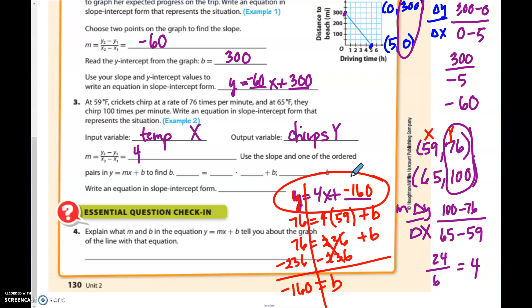So this equation is Y equals 4X minus 160. Number four. Explain what M and B in the equation tell you. M tells me slope. And that is my constant change. This is my constant change. And the B tells me my Y-intercept. So it's telling me where the line crosses the Y-axis. Where line crosses the Y-axis.